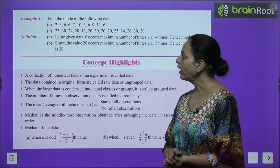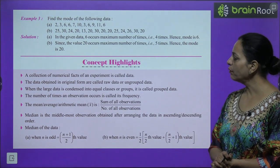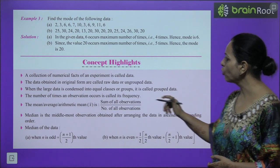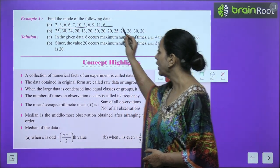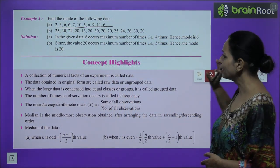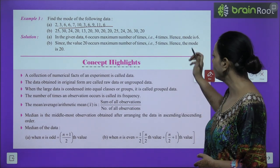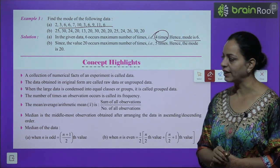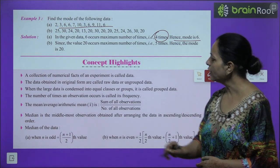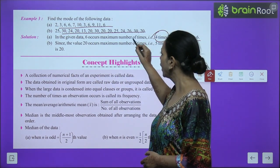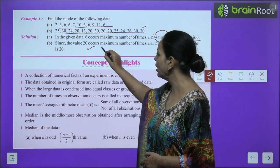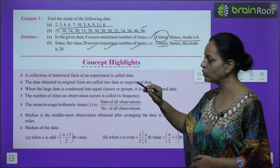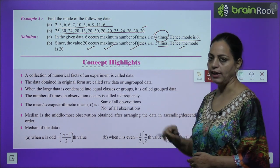Example 3: Find the mode of the given data. Part A — look for which number occurs more times: 6 is occurring 4 times, so the mode is 6. Part B — 20 occurs the maximum number of times, that is 5 times, so the answer is 20.